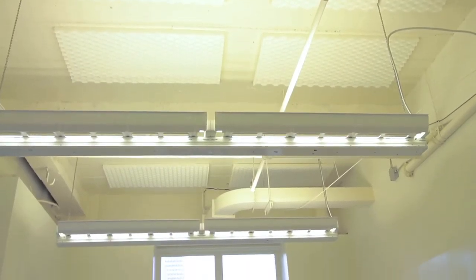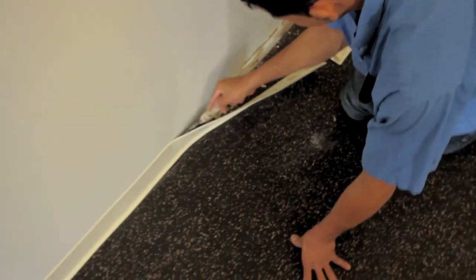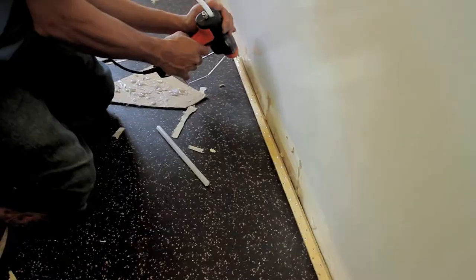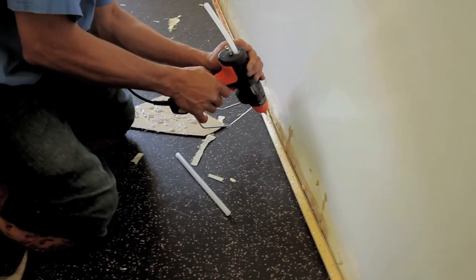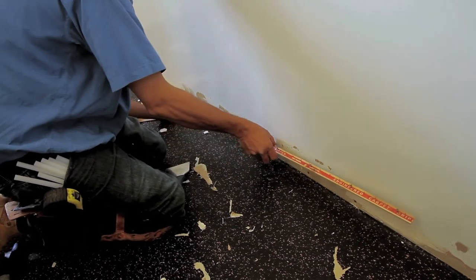We then began to prep the room to put in carpeting by taking out the molding. Then we put down the carpet grip, gluing it around the edge of the room, giving something for the carpet to hold on to.